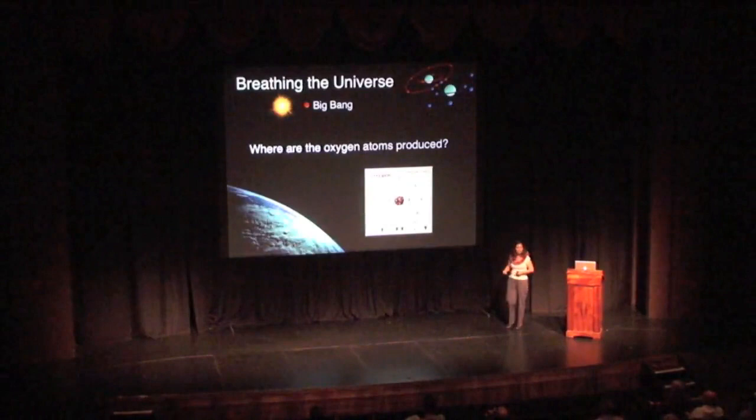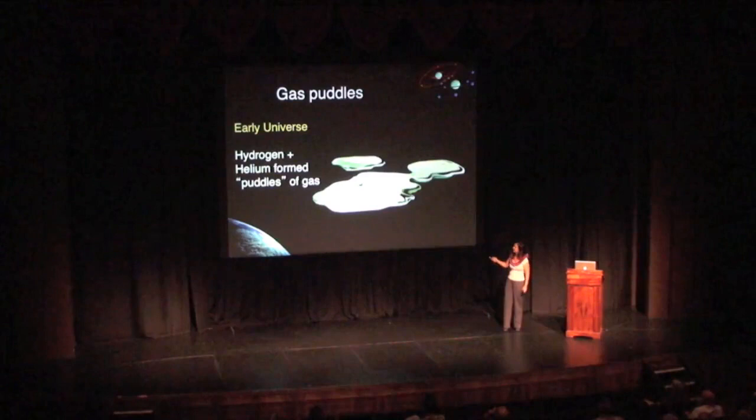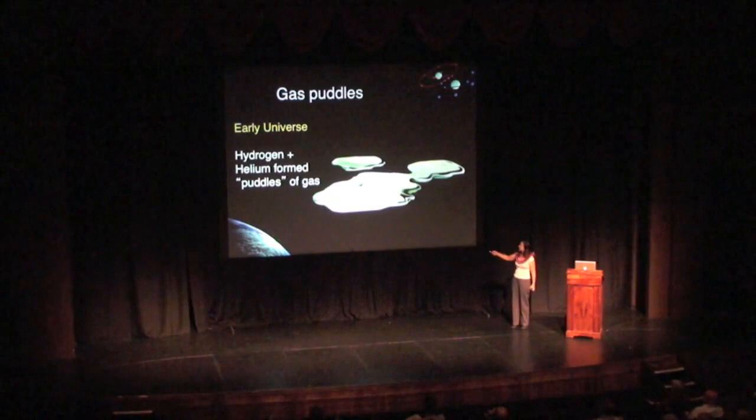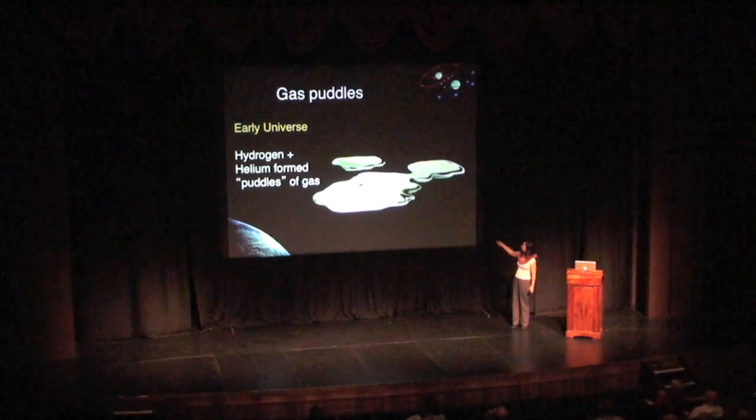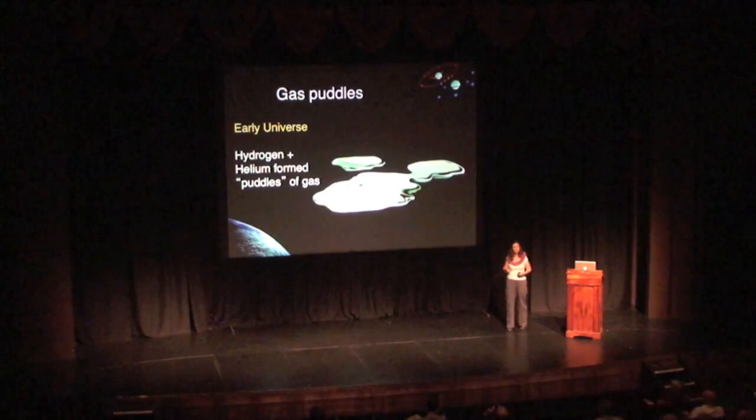Where did oxygen start being created? After the Big Bang, suddenly space was moving apart. In the very early days of the universe it was actually very, very dark — hydrogen and helium atoms formed and they made puddles of gas. But the puddles were dark; they didn't emit light, they absorbed light. So we call those the dark ages of the universe.